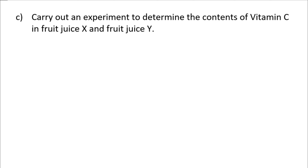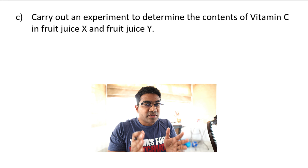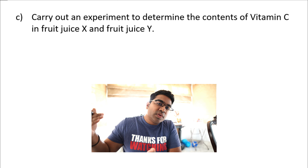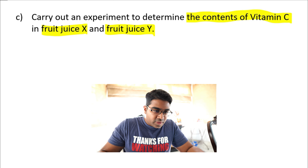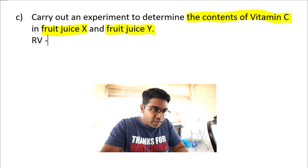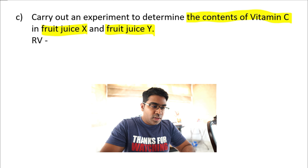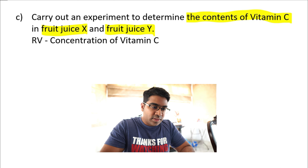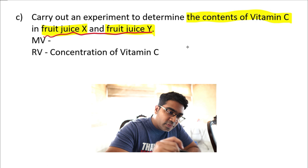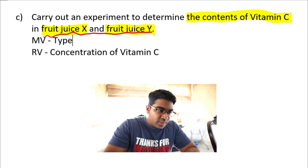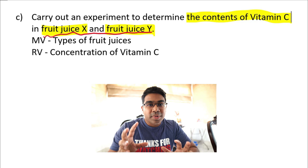Now let's try a biology question: 'Carry out an experiment to determine the contents of vitamin C in fruit juice X and fruit juice Y.' Whatever comes after 'determine' is usually the responding variable. If you are familiar with the theory, the responding variable is the concentration of vitamin C. The manipulated variable is the types of fruit juices — fruit juice X and fruit juice Y — so you should answer 'types of fruit juices.' What is set at the beginning is the MV; what is measured at the end is the RV.